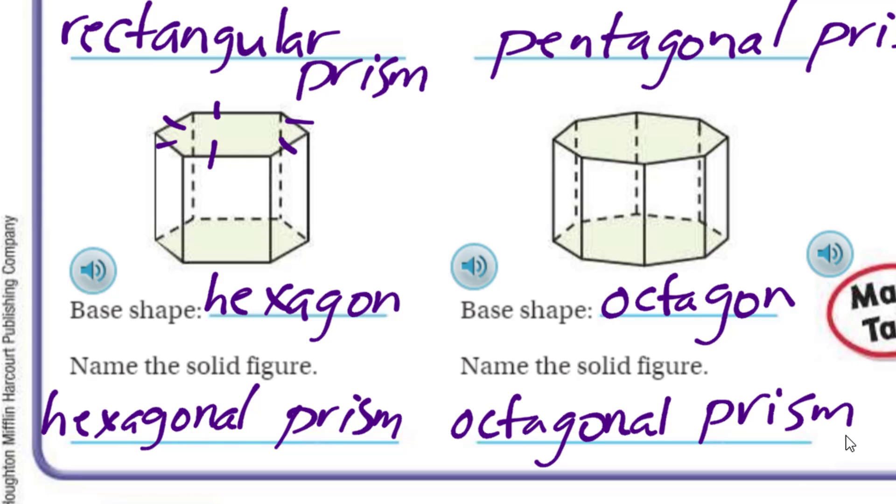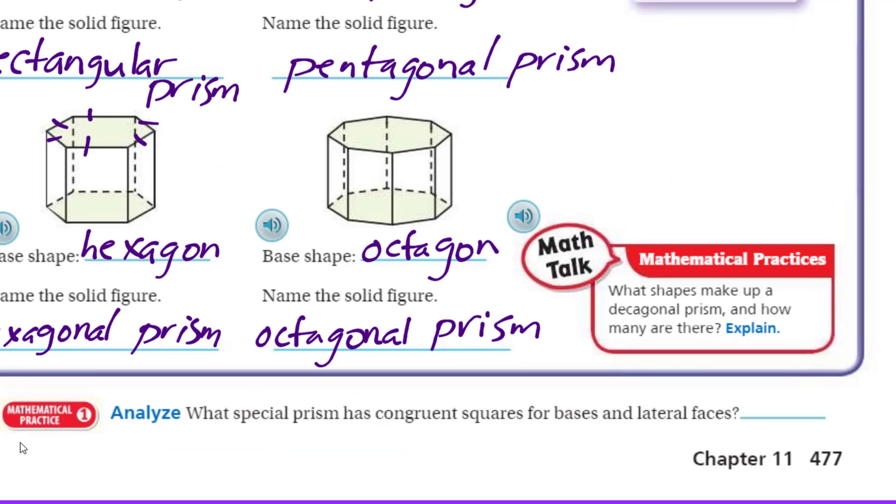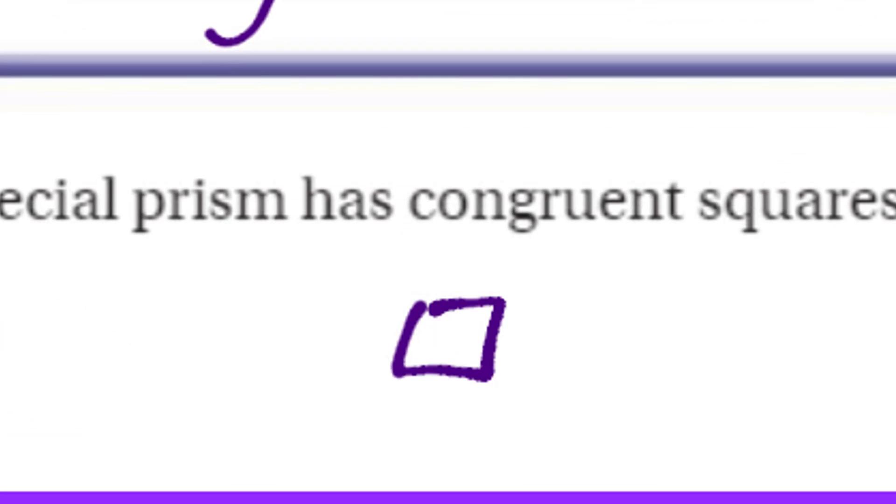It does say here, Mathematical Practice: Analyze what special prism has congruent squares for bases and lateral faces. Oh, I like this one! It's a cube. Yep, a beautiful little cube. I always like drawing them because you have squares as your lateral faces, like it said, and also the base.